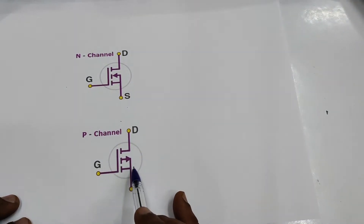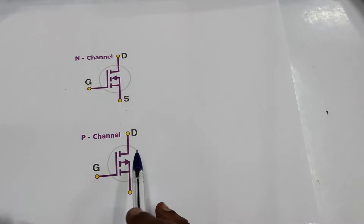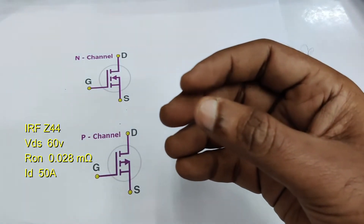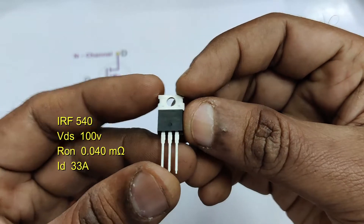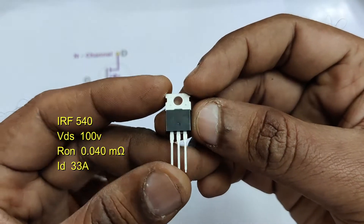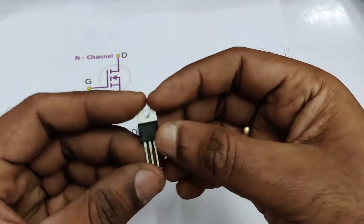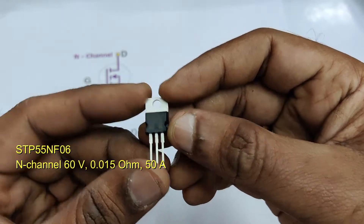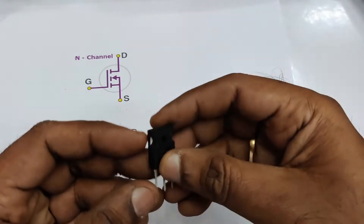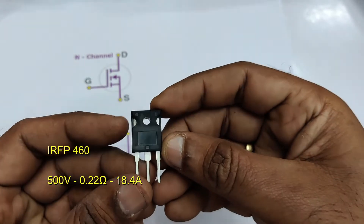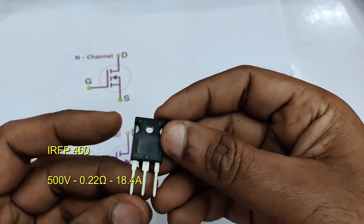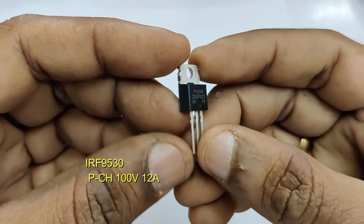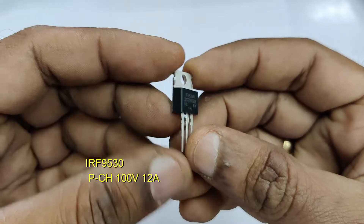Let us look at famous MOSFETs in the market. The IRFZ44 has a drain-source voltage of 60V and can handle 50A, with an RDS(on) as low as 28mΩ. There is also the IRF540 at 100V and 33A, the 55NF06 at 60V and 50A, and the IRF460 which is an older one that can handle huge voltage with a current of 18A. All these are used in inverters. The P-channel IRF9530 can handle 100V and 12A.